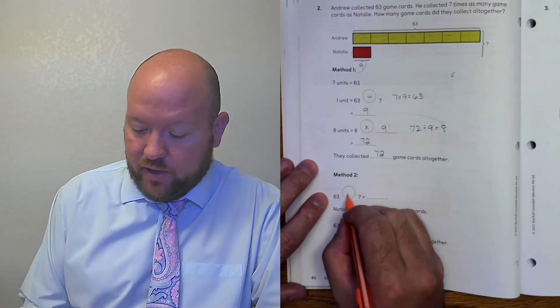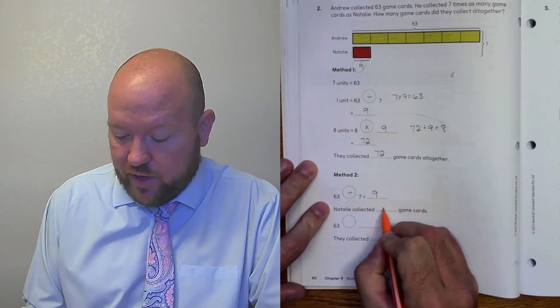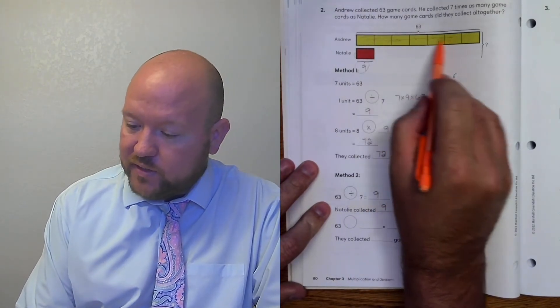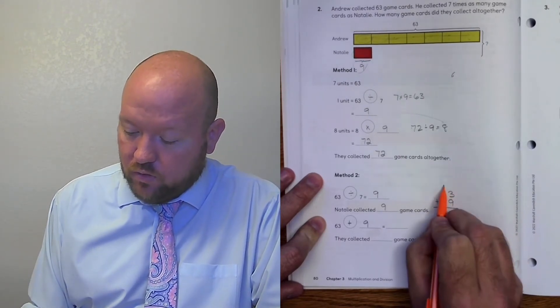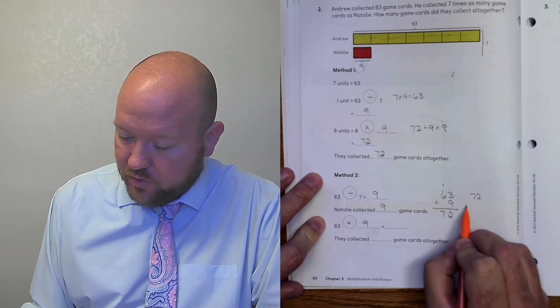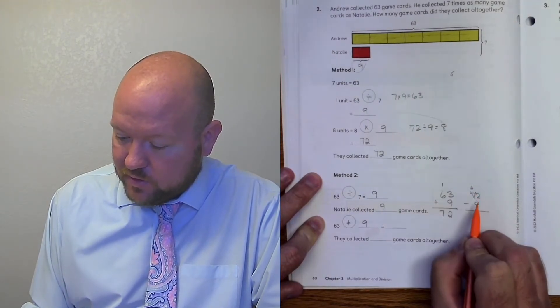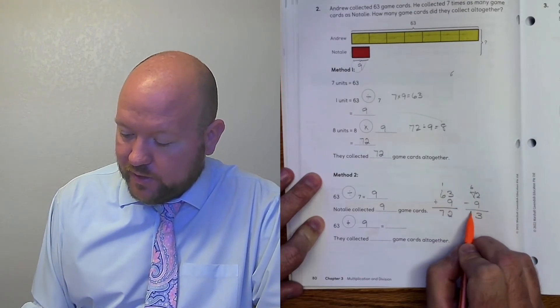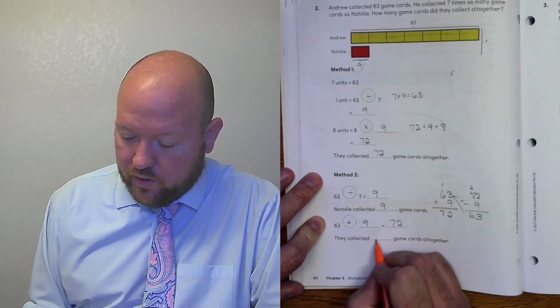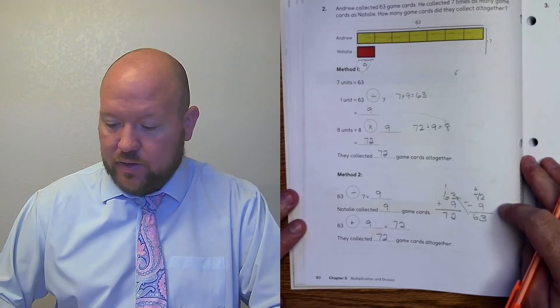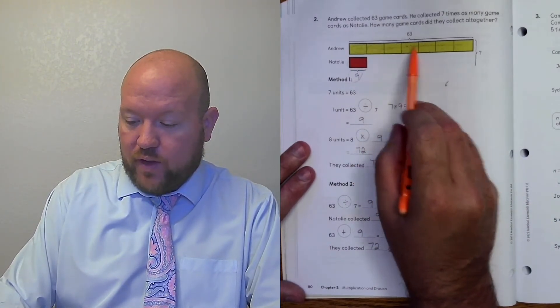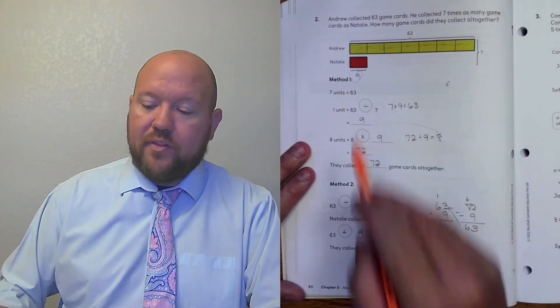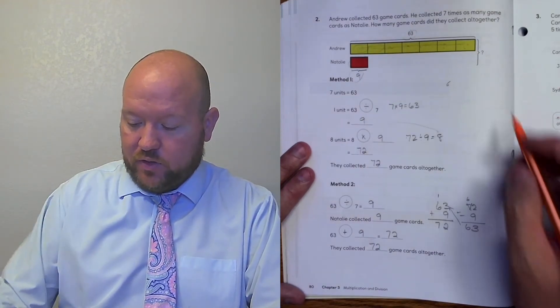Now, method two — we do the same thing: 63 divided by seven is nine, so Natalie collected nine. The other way we could do it then is now that we know we have 63 here and nine from Natalie, we could add 63 plus nine. Three plus nine is 12, one plus six is 72. Let's check: 72 minus nine. We've got to regroup — this becomes six, comes to 12. 12 minus nine is three, six minus nothing is six. Those two check out. Therefore they have 72 cards. So there are two different ways of solving this, and both ways are right — eight times nine equals 72, or 63 and nine make 72.